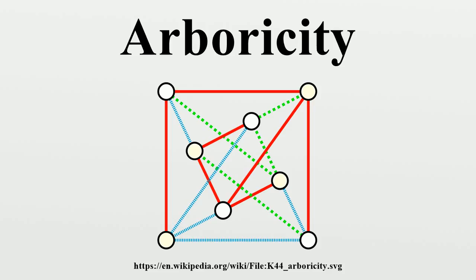Schnyder used a special decomposition of a planar graph into three forests called the Schnyder wood to find a straight-line embedding of any planar graph into a grid of small area. The arboricity of a graph can be expressed as a special case of a more general matroid partitioning problem, in which one wishes to express a set of elements of a matroid as a union of a small number of independent sets. As a consequence, the arboricity can be calculated by a polynomial-time algorithm.